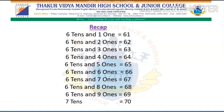Let's revise. Six tens and one one is equal to 61. Six tens and two ones is equal to 62. Six tens and three ones is equal to 63. Six tens and four ones is equal to 64. Six tens and five ones is equal to 65.